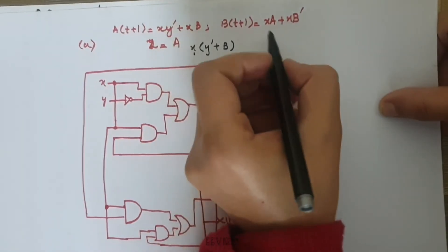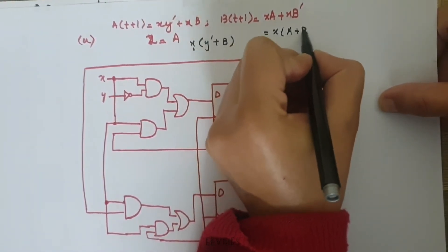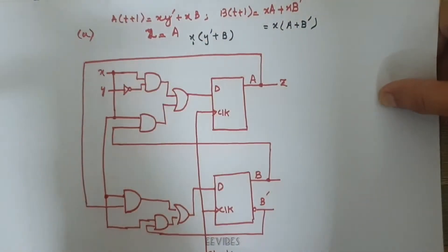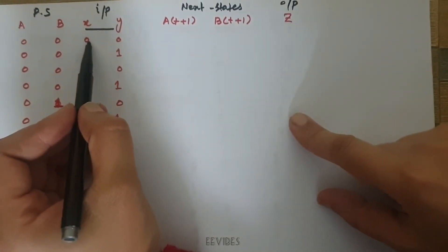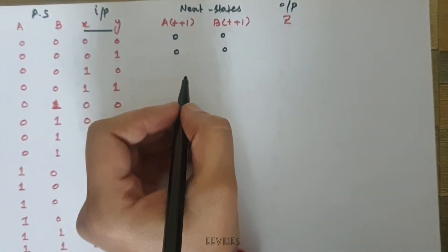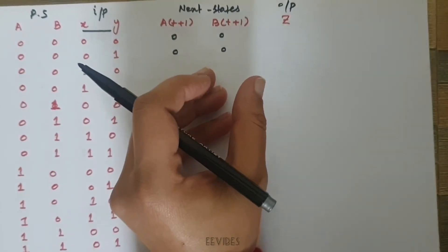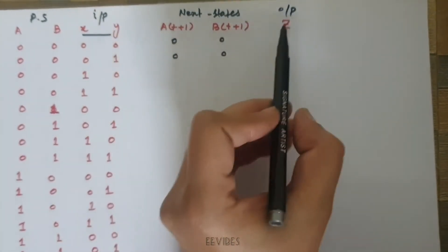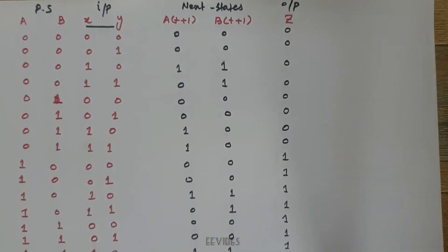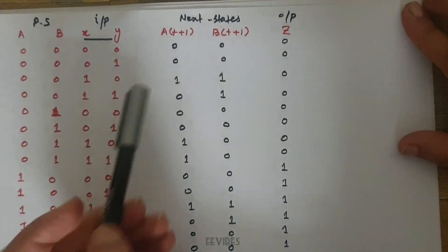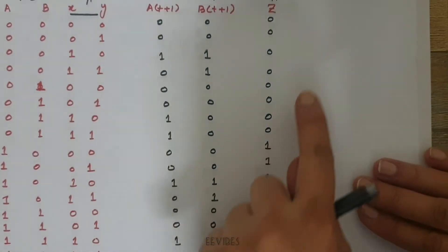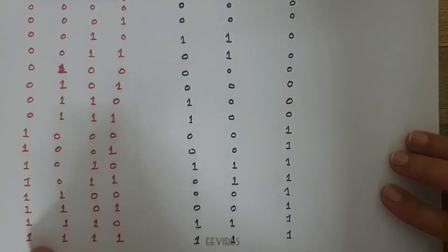Similarly, for B(T+1), we can simplify it as X into (A plus B complement). So for all values where X is equal to 0, the next state variable will be 0. Considering this, where X is equal to 0 we have 0,0 and 0,0 entries. By taking this approach we can fill the columns A(T+1) quickly. Also, since Z is equal to A, whatever the value of A is in the present state will be assigned to Z. In this way the columns of the state table are filled, with next states and output function represented.